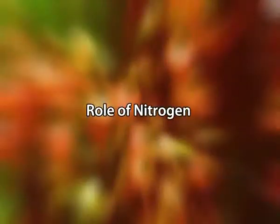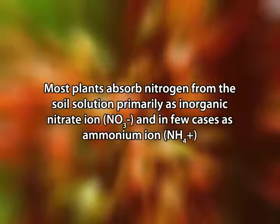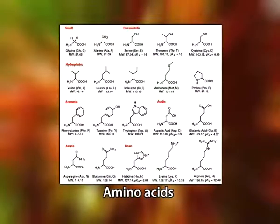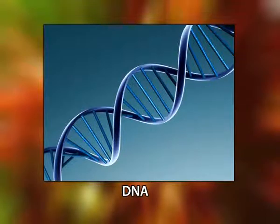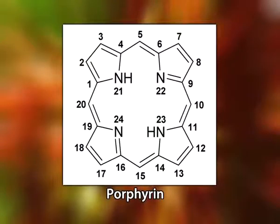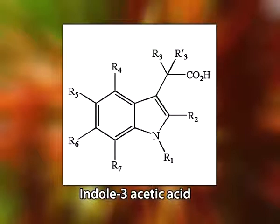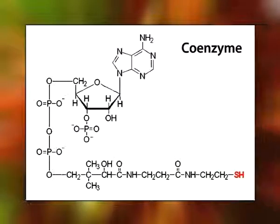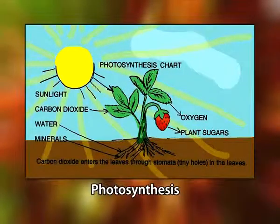Now let us discuss nitrogen. Nitrogen is the mineral nutrient that plants require in the greatest amounts. Most plants absorb nitrogen from the soil solution primarily as inorganic nitrate ion, and in a few cases as ammonium ion. Nitrogen serves as a constituent of many plant cell components including amino acids, nucleic acids (RNA and DNA), porphyrins, certain hormones like indoleacetic acid and cytokinins, and coenzymes.